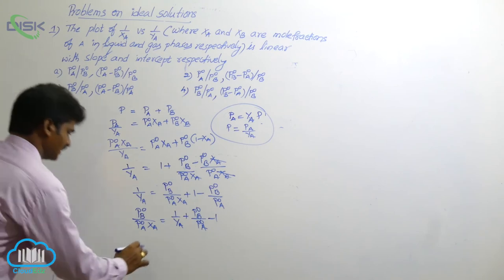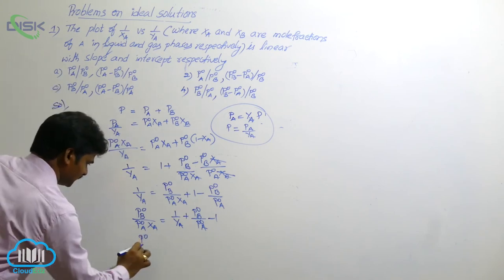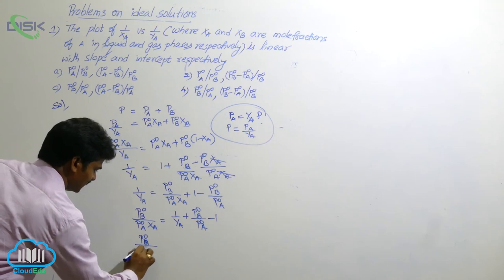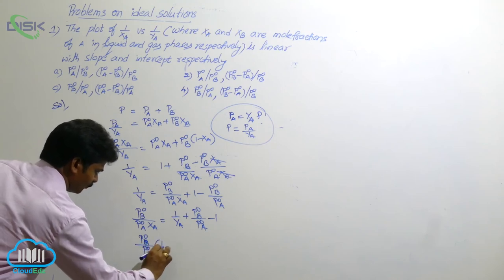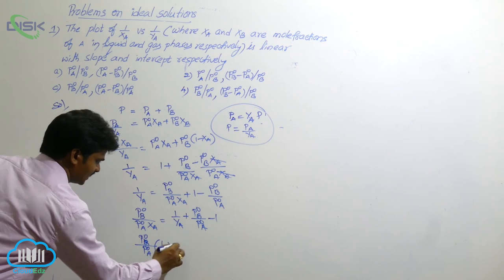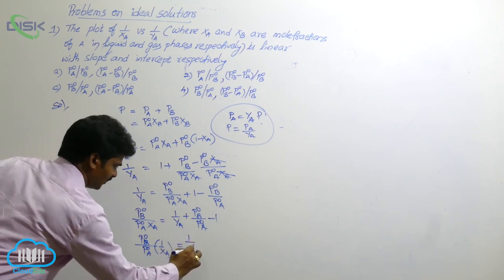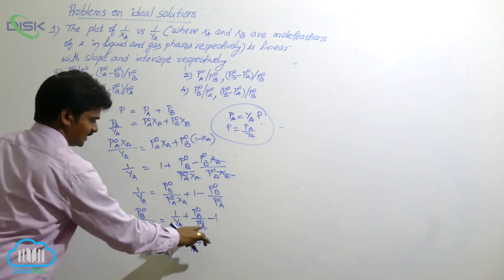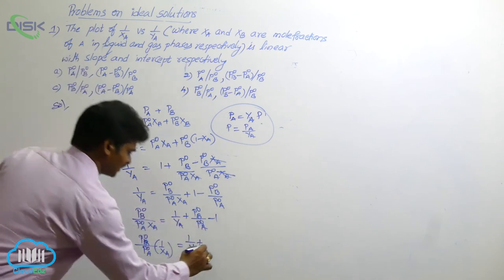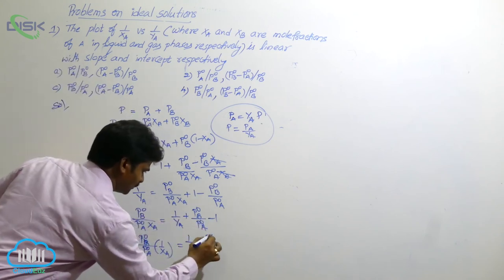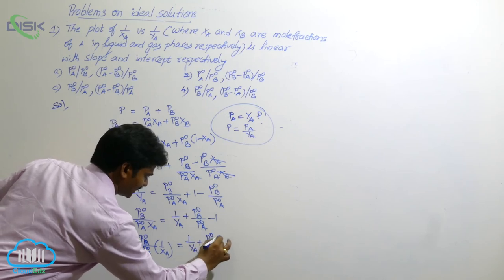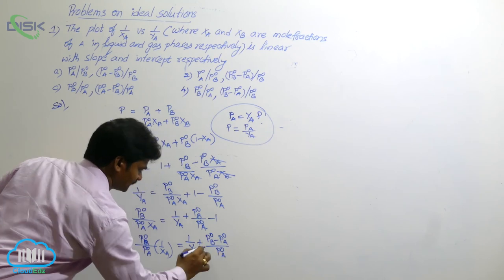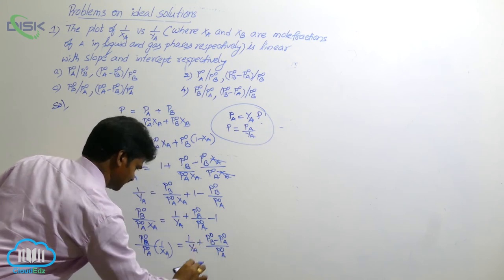Take LCM, that side. Then here P naught B by P naught A into 1 by XA is equal to 1 by YA plus, what is LCM here? LCM is P naught A. Then in numerator, P naught B minus P naught A by P naught A. So this is the term we got.